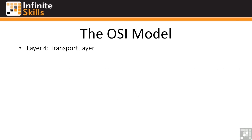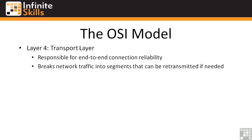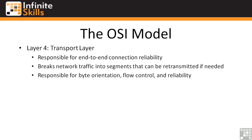Let's move on to Layer 4. Layer 4 is the transport layer. It is responsible for end-to-end connection reliability, performing this by breaking network traffic into segments that can be retransmitted if needed and if the protocol supports it. Layer 4 is also responsible for byte orientation, flow control, and reliability. The transport layer can actually throttle your connection should you have quality of service or class of service rules in place for network transmission speeds.